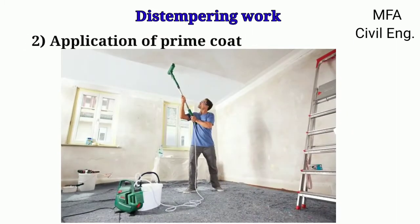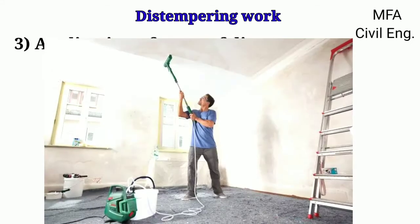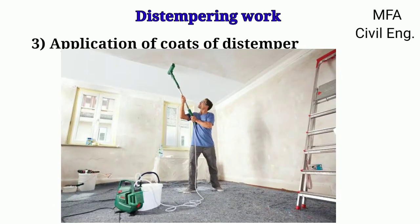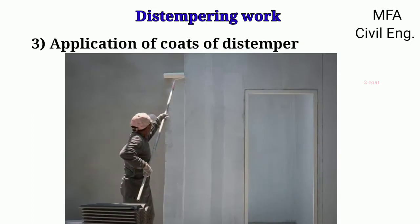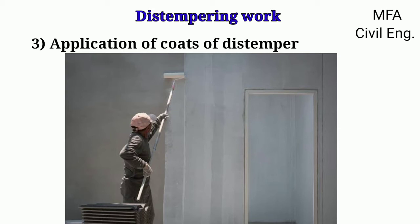After proper preparation of the surface, the next step is to apply primer or a prime coat. After applying the prime coat, it is allowed to dry. After the prime coat is properly dry, distemper is applied in two or three coats. It is important that the next coat is applied only when the previous coat has dried up completely and become hard.